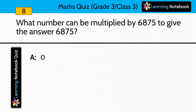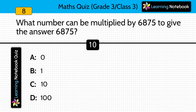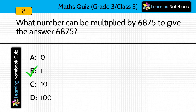Question eight: what number can be multiplied by 6,875 to give the answer as 6,875? Answer is 1. If we multiply any number by 1, we get the product as the number itself.